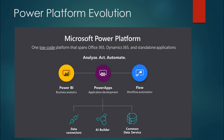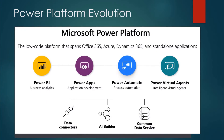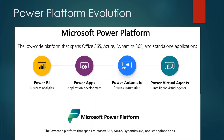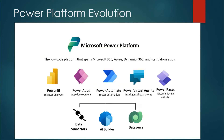Looking at this evolution in diagram form: the initial Power Platform included Power BI, Power Apps, and Flow — which was the legacy name for Power Automate — along with data connectors, AI Builder, and Common Data Service. Common Data Service was later renamed to Dataverse. Power Virtual Agents was then added as the fourth component, and now we have five main applications with Power Pages, plus supporting components.